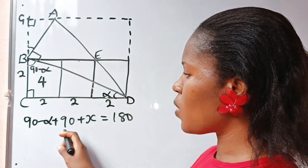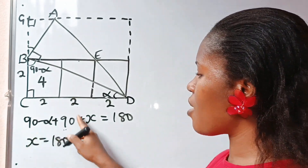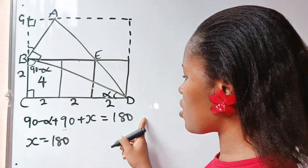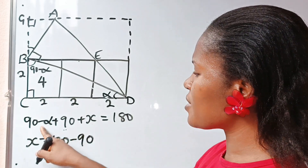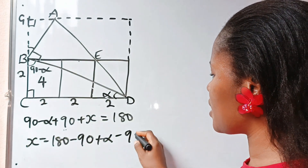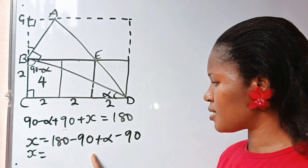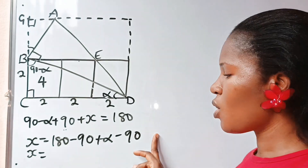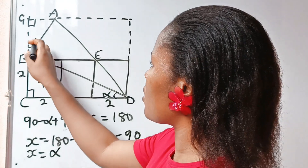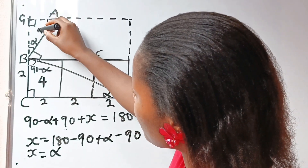So we have 90 plus 90 is 180. Transferring everything else to the right-hand side: plus 90 crosses to become minus 90, minus alpha crosses to become plus alpha, and plus 90 crosses to become minus 90. So X equals 180 minus 90 plus alpha minus 90, which leaves us with just alpha. So this angle is alpha, which means this remaining angle should be 90 minus alpha.